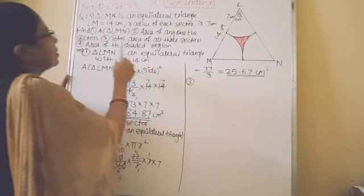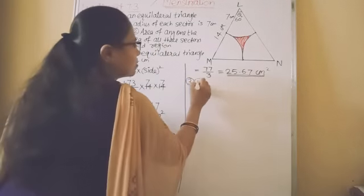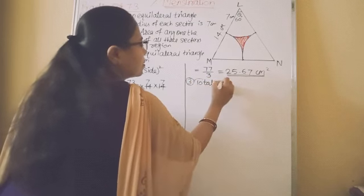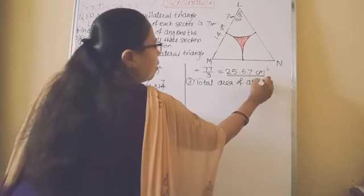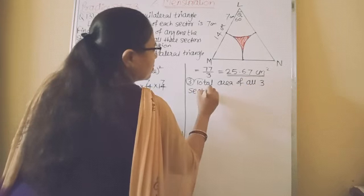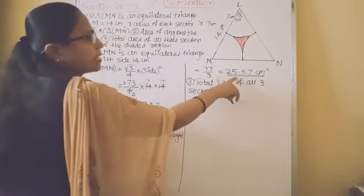Third one. Total area of all three sectors. Total area of all three sectors equal to 3 multiplied by area of one sector.